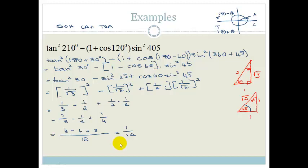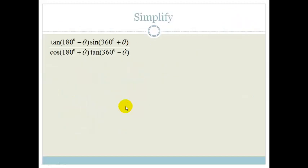Right, not too bad. It looks scary but if you struggle with it, go through it again and you'll understand it. Let's look at this one: tan of 180 minus theta — I told you I was going to sneak it in — cos of 180 plus theta, times sine of 360 plus theta, divided by tan of 360 minus theta.